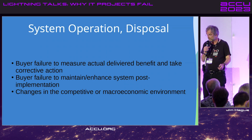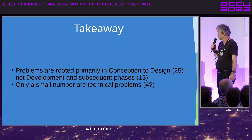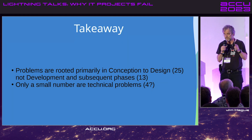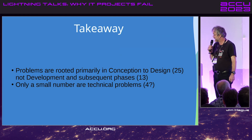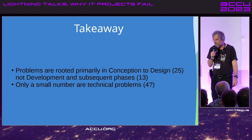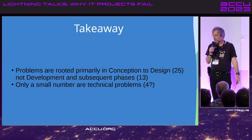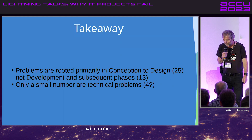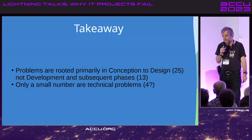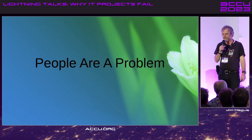There's a couple of takeaways from this. First of all, problems are mostly rooted in conception to design, not development and subsequent phases — and look at the big one from the bottom: only a small number, a tiny number, are actually technology problems. So what's the moral of this story? The moral is very simple: Douglas Adams was right. As his summary of the summary of the summary of the problem says, it's the people, stupid.